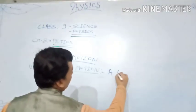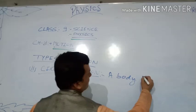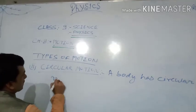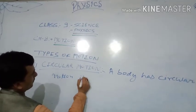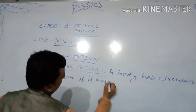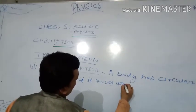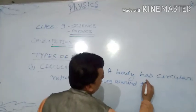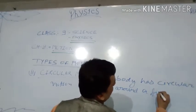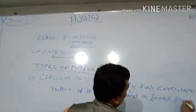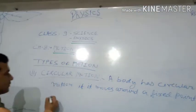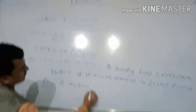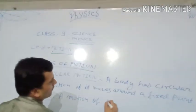A body is said to be in circular motion if it moves around a fixed point. Examples of circular motion: the motion of a fan, and the motion of wheels.